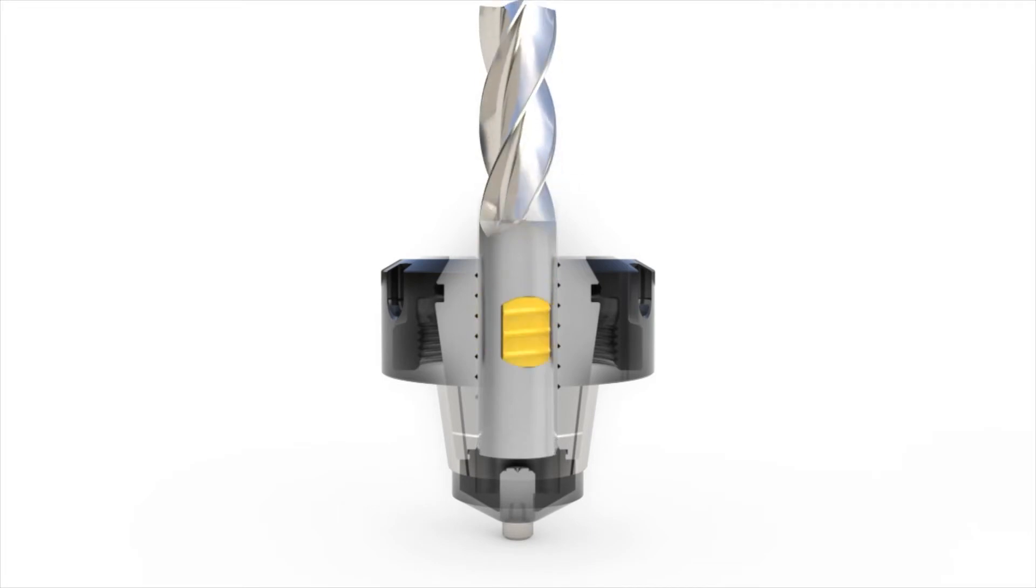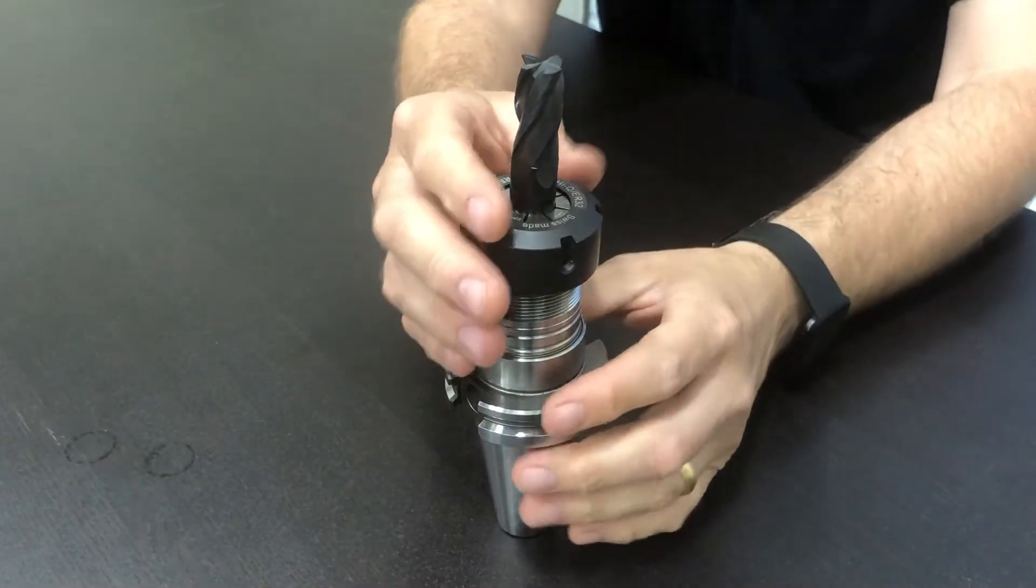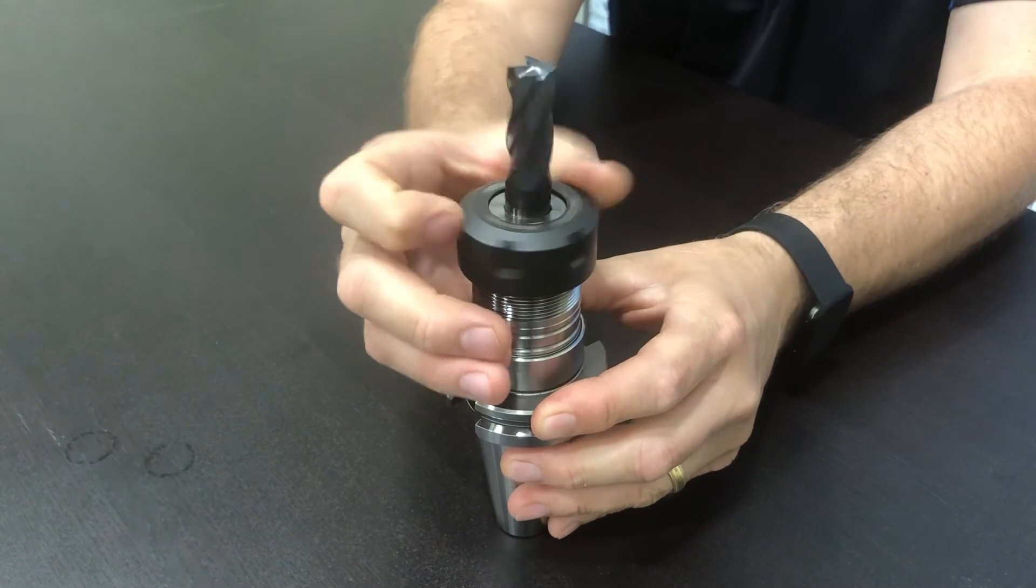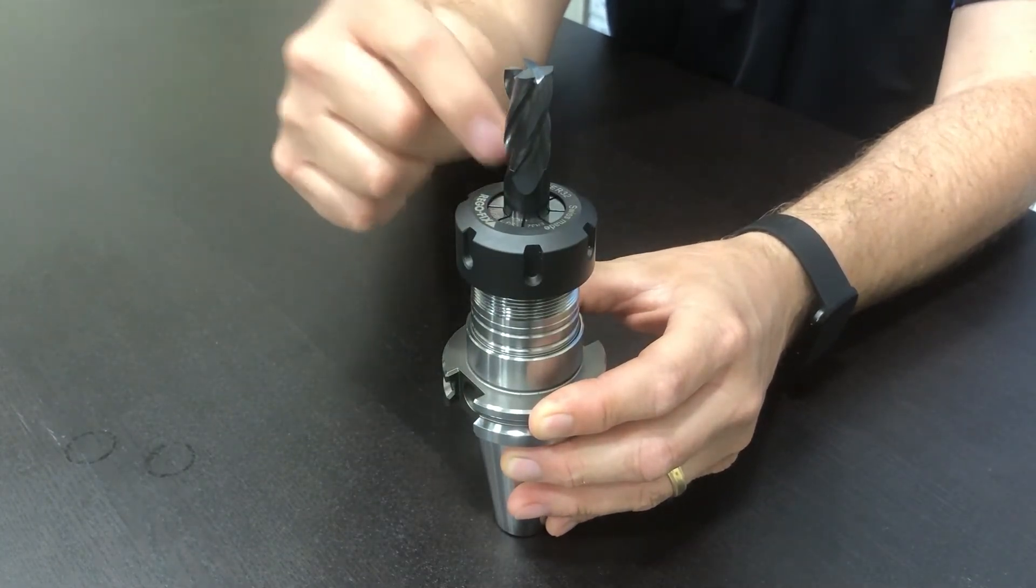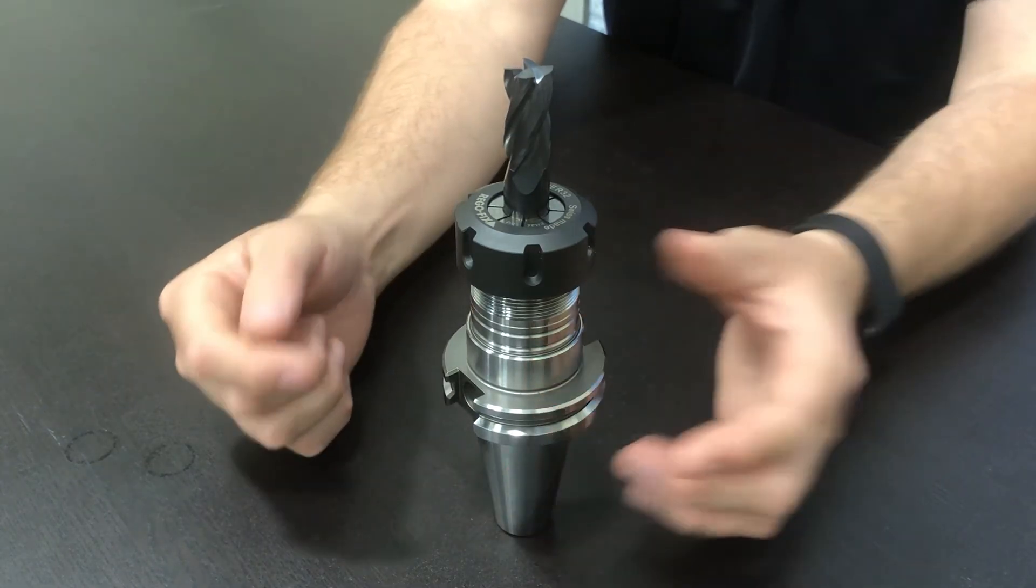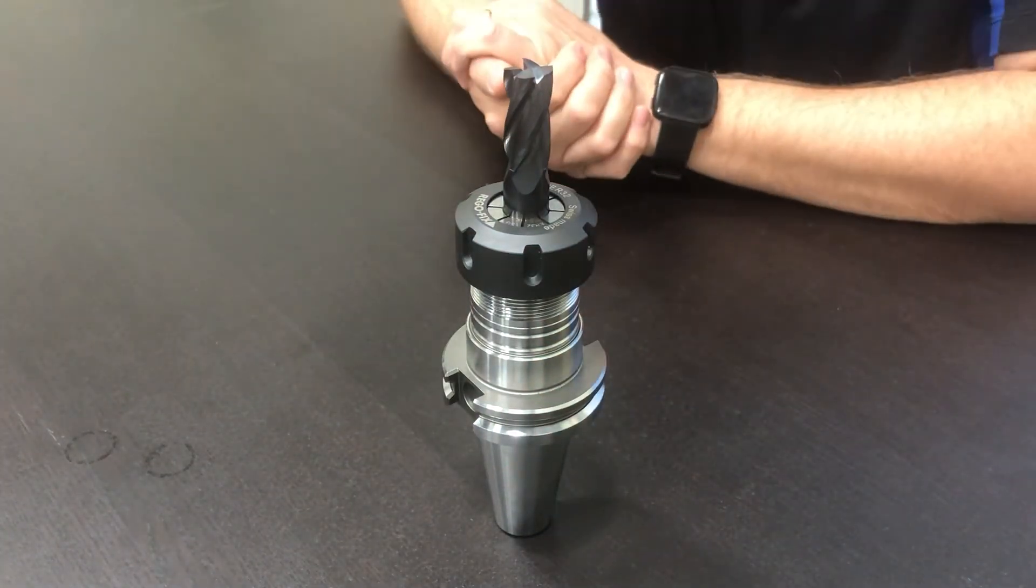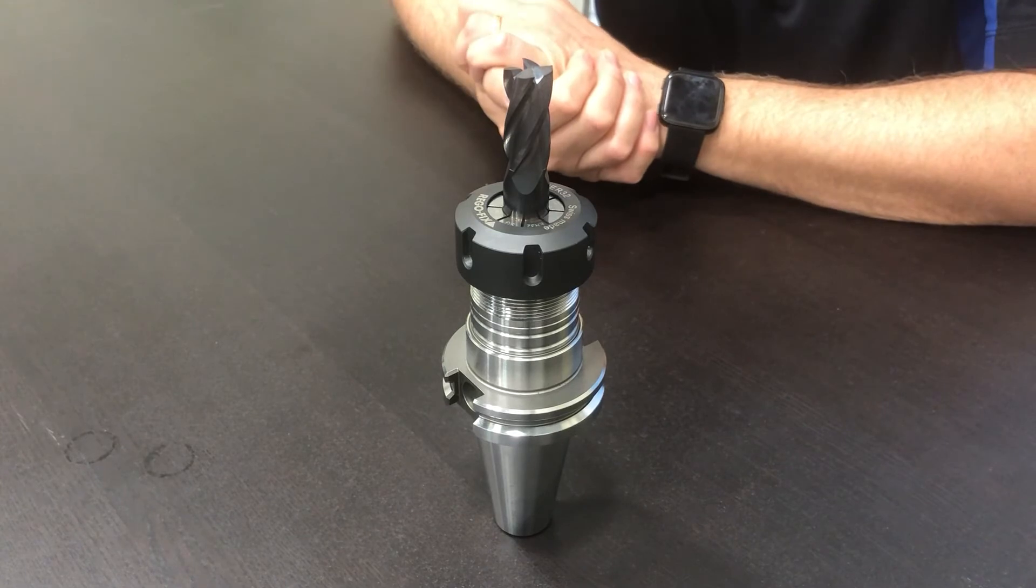I can now take my tool holder and put my entire assembly together. At this point in time, I have locked the end mill to the collet and the collet to the tool holder body. I have a very secure gripping system in this.